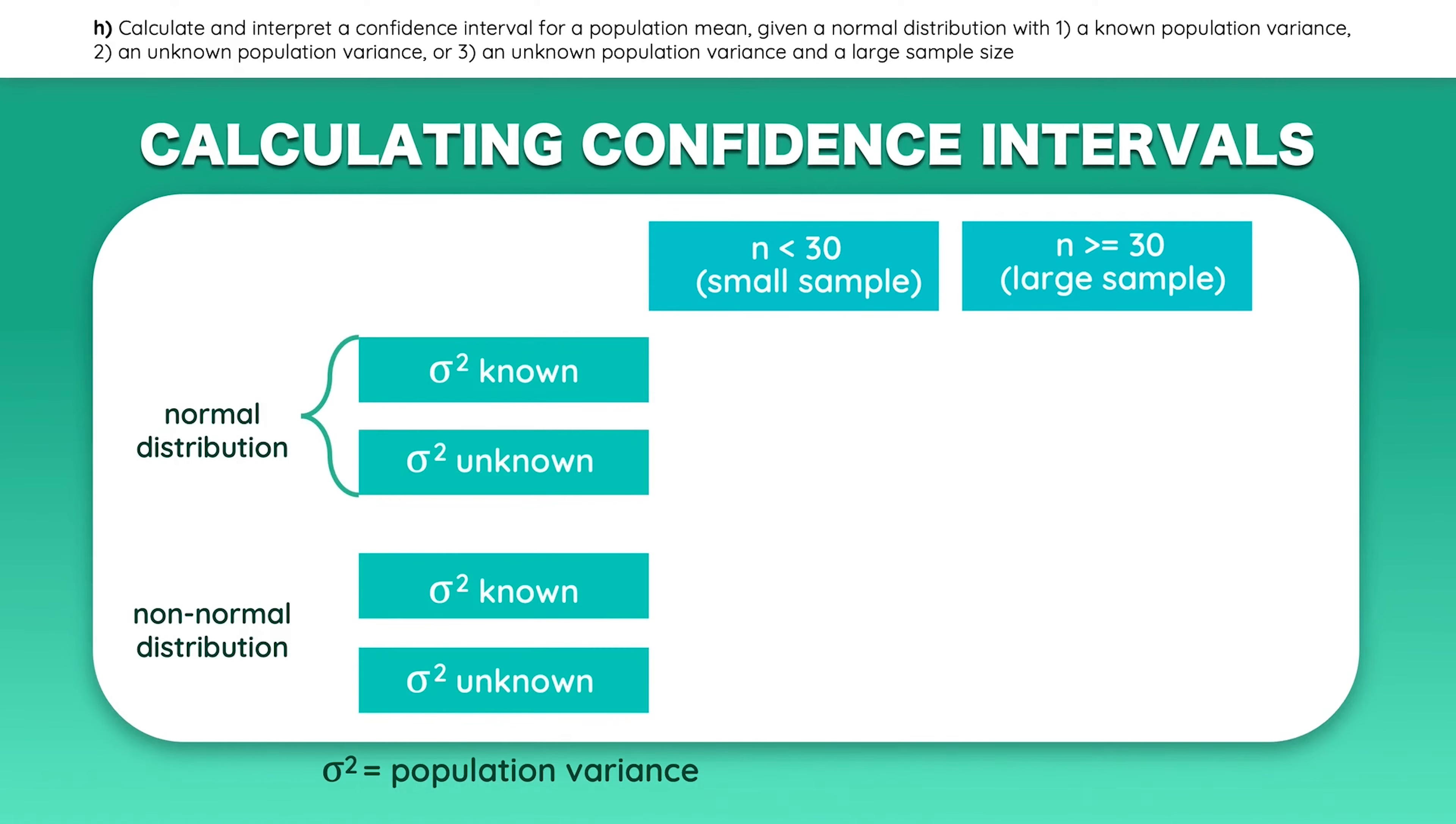If the population is normally distributed and you know the population's variance, then use the formula with the z statistic. If the population variance is unknown, use the t statistic. If you have a non-normal distribution, you cannot do the calculation if you have a small sample. But if you have a large sample, use z values when the population variance is known, and t values when it's unknown. Technically, you can also use z values in these cases, but the t statistic gives the best answer. Pause the video if you need to take any notes.